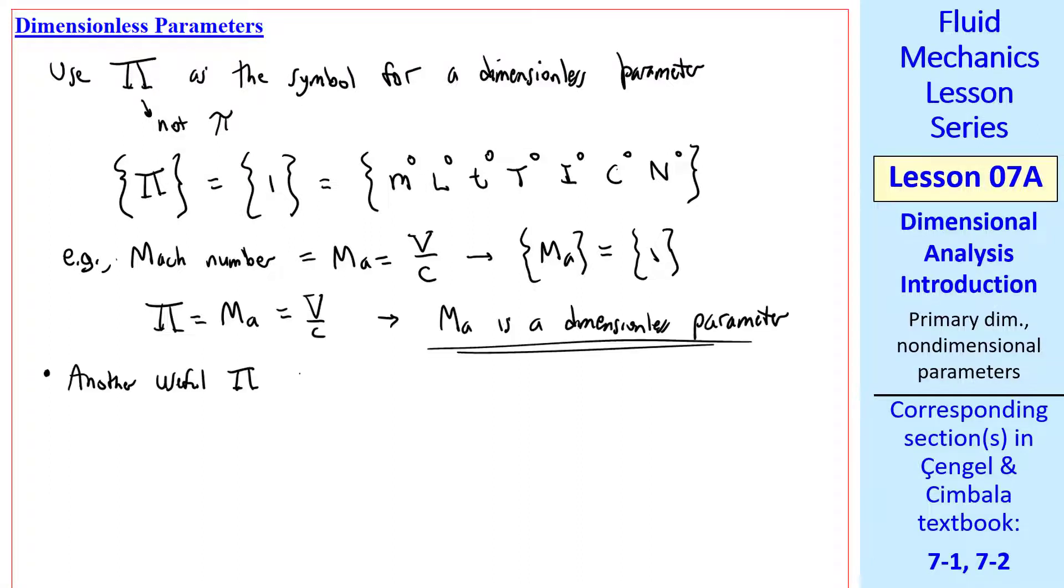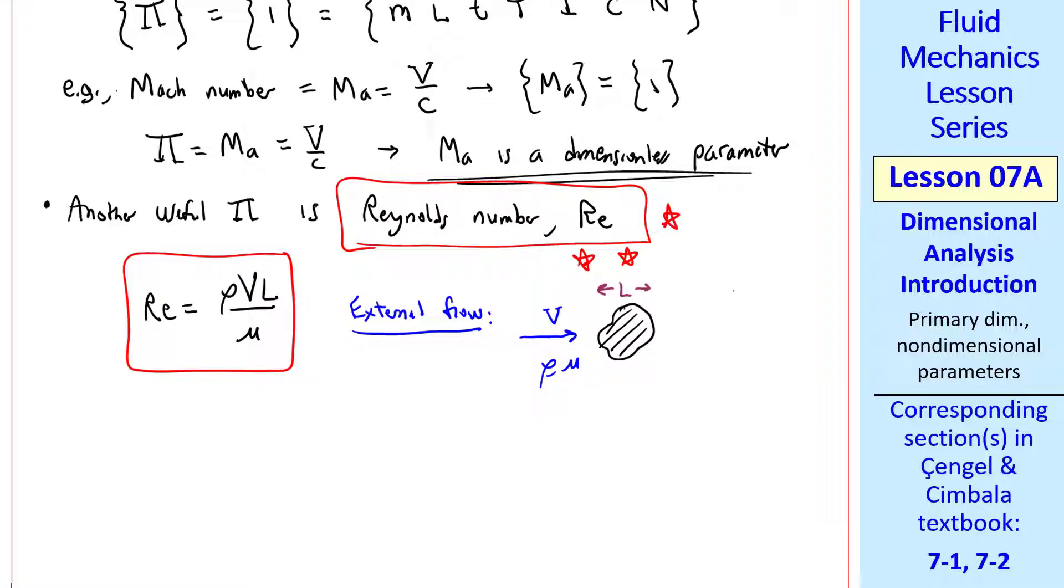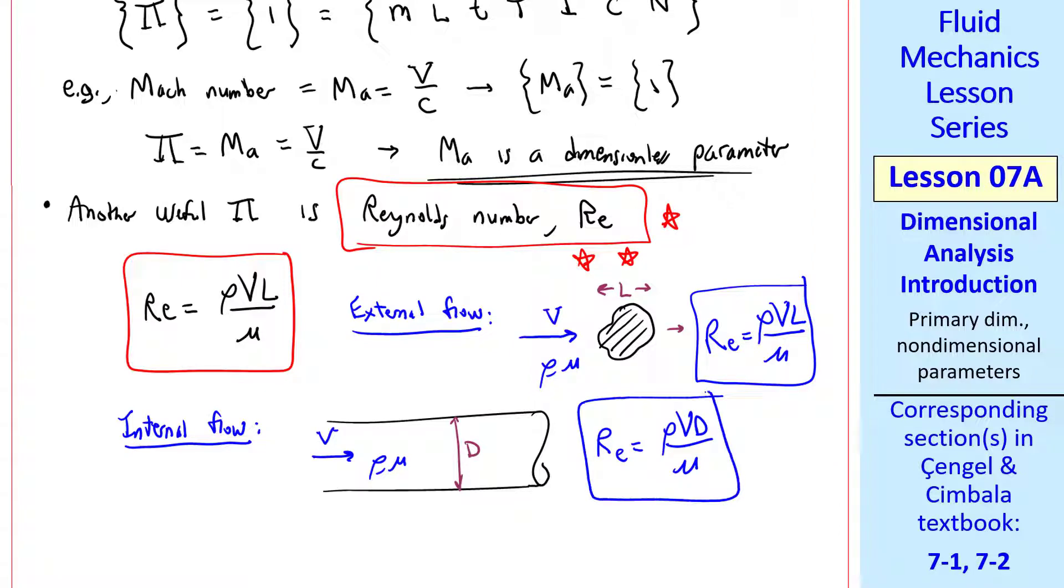Another useful pi is Reynolds number, Re. This is the most important dimensionless parameter in fluid mechanics. We define it as Reynolds number is rho VL over mu, and it's useful for external flow, or suppose you have some object exposed to a flow of speed V in a fluid with density rho and viscosity mu, and L is some characteristic length of that object. Then our Reynolds number is rho VL over mu. Reynolds number is also useful for internal flow. For example, flow in a pipe, where V would be the average speed. The fluid has density rho and viscosity mu, and we can use diameter or radius as the characteristic length. We typically choose diameter, so the Reynolds number is rho VD over mu.